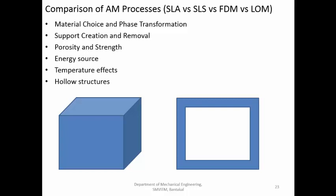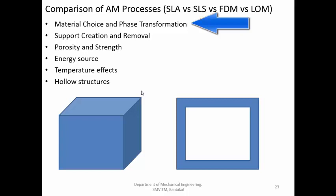Now if we want to compare the different additive manufacturing processes, we will mainly discuss four processes: SLA (stereolithography), which is a liquid polymer system; SLS (selective laser sintering), which is a discrete particle system; FDM (fused deposition modeling), which is a molten material system; and LOM (laminated object manufacturing), which is a solid sheet system. The parameters we use to compare these processes include material choice and phase transformation.